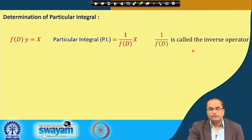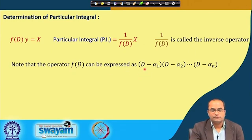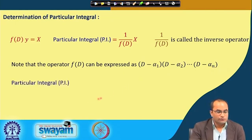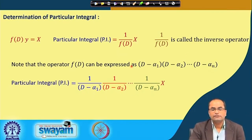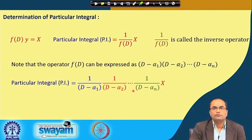This 1/f(D) is called the inverse operator. The idea, already discussed, is that f(D) can be expressed in terms of (D − α₁)(D − α₂)···(D − αₙ), where the αs are the roots of the auxiliary equation. So the particular integral written as (1/f(D))X equals (1/(D−α₁))(1/(D−α₂))···(1/(D−αₙ)) operated on X.